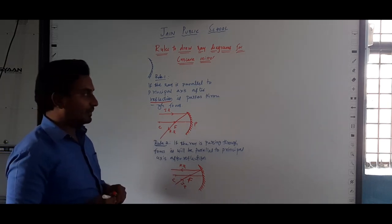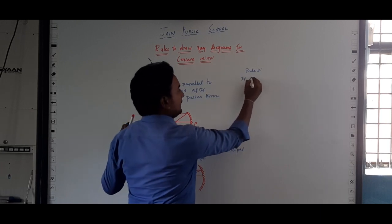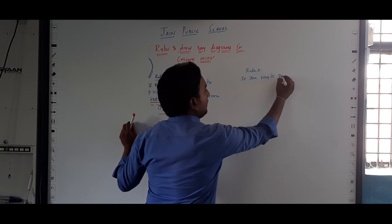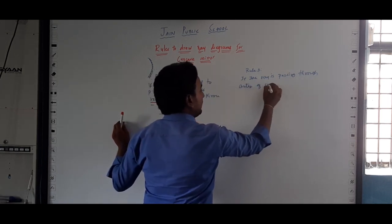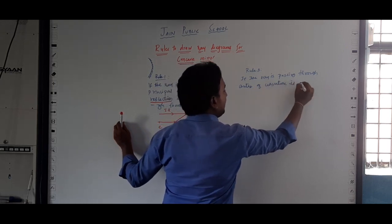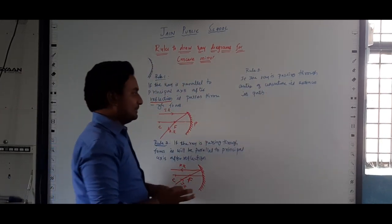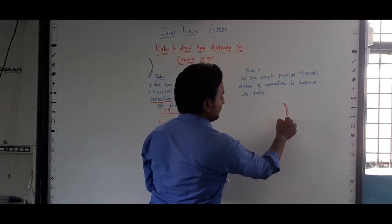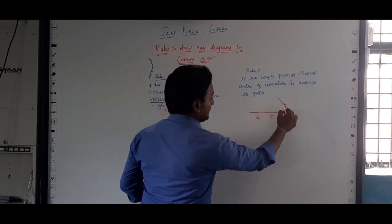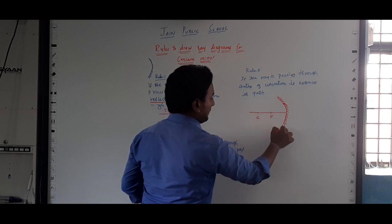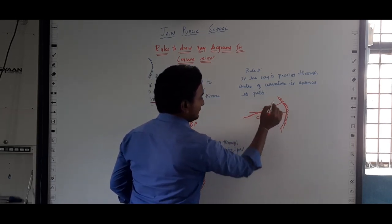Rule number 3 — very important, very easy. If the ray is passing through the center of curvature, it retraces its path. So I will draw a concave mirror, block it so that light should not go through, and draw the principal axis. This is the focus, this is the center of curvature. If the ray is passing through the center of curvature, it retraces its path. This is rule number 3.